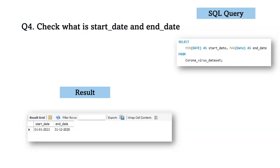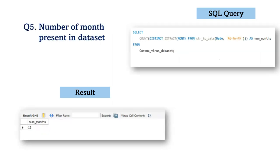Next, we check the start date and end date within the dataset. For this, we have used the MIN date and MAX date functions. We also find the number of months present in the dataset using the COUNT DISTINCT function on the date column, which gives us 12.